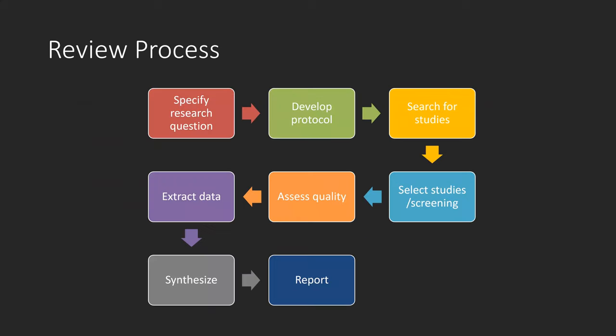This diagram indicates the main stages of the review process. We will specify a research question, develop a protocol, search for studies, select studies, assess quality, extract data, synthesize the findings, and write up a report.